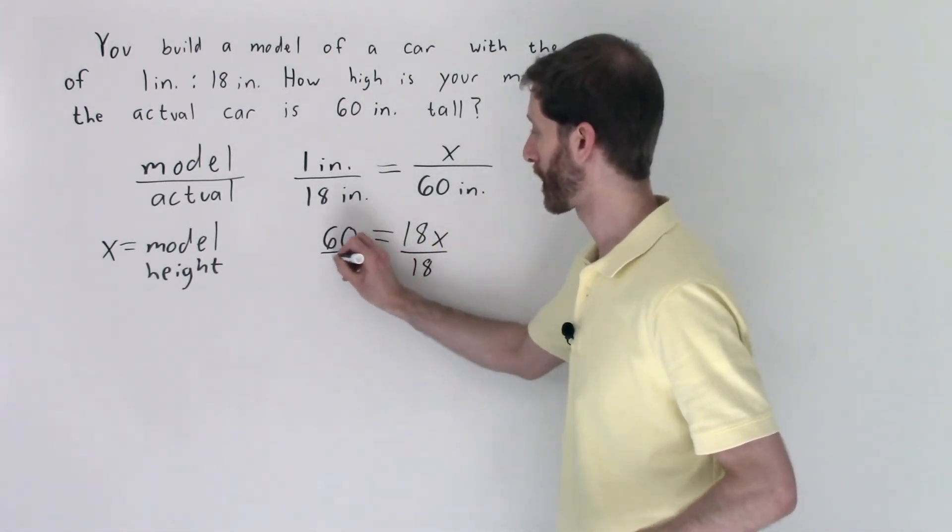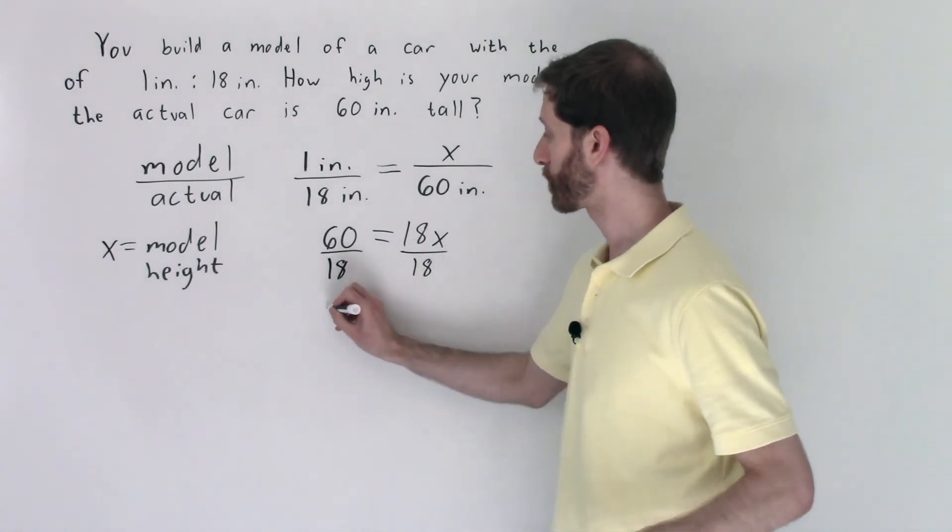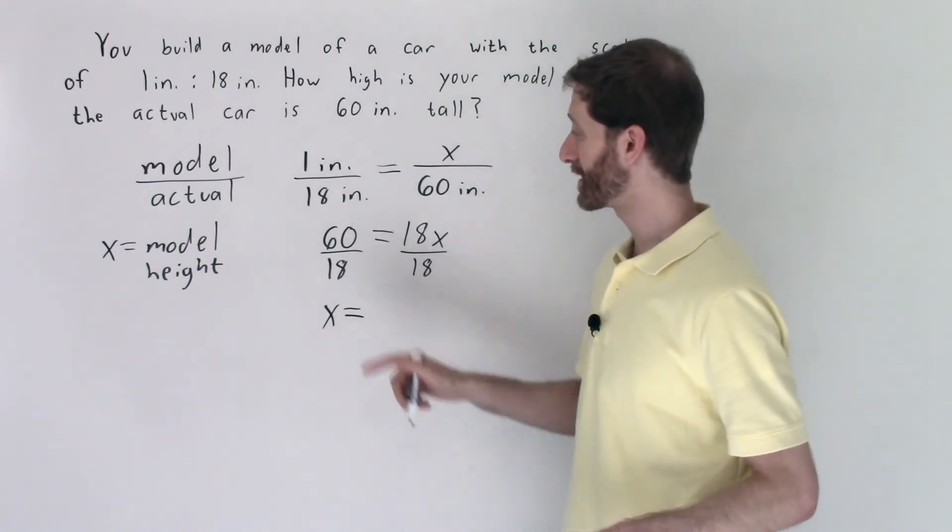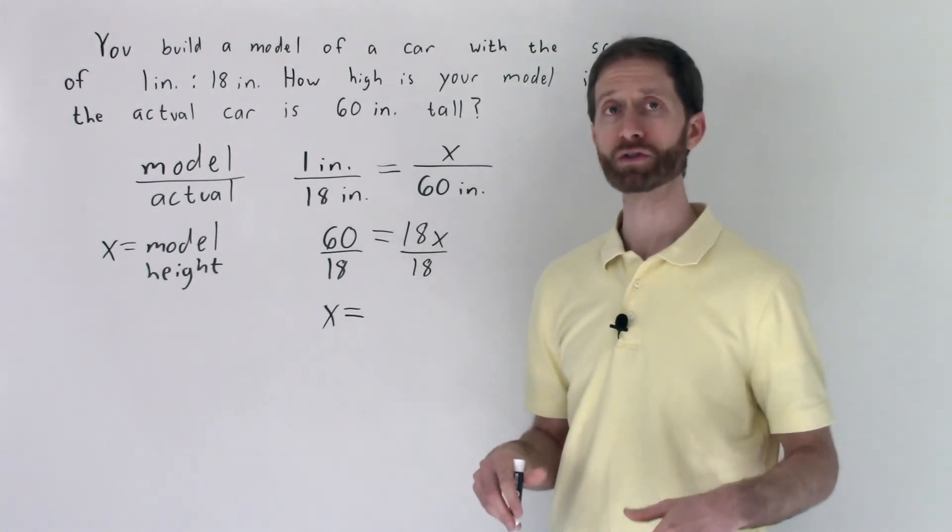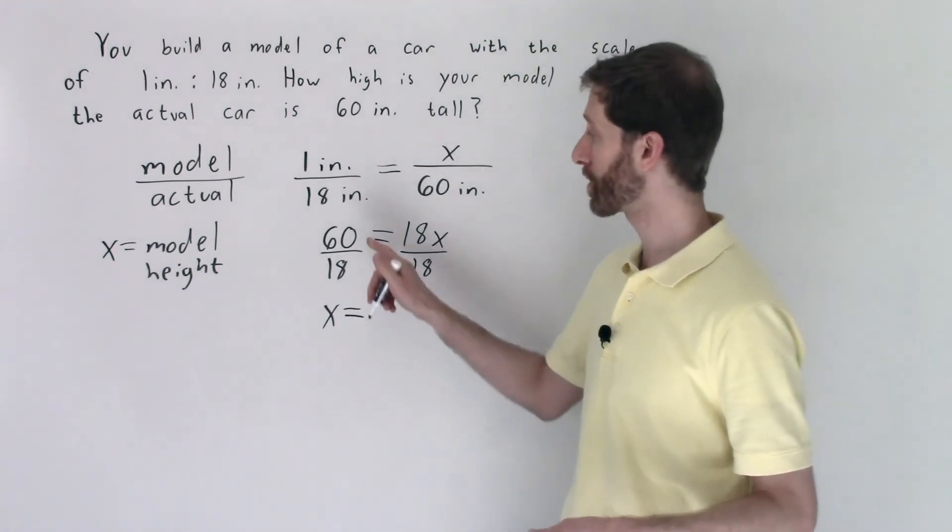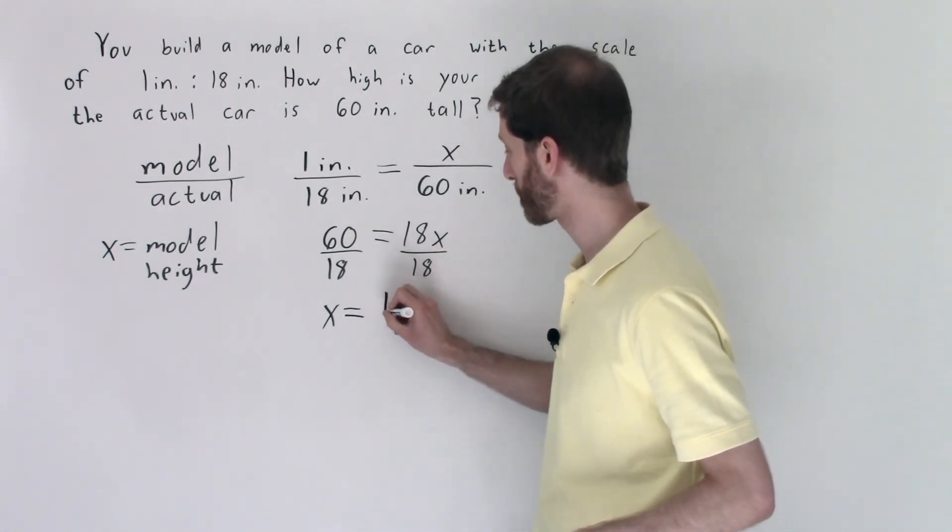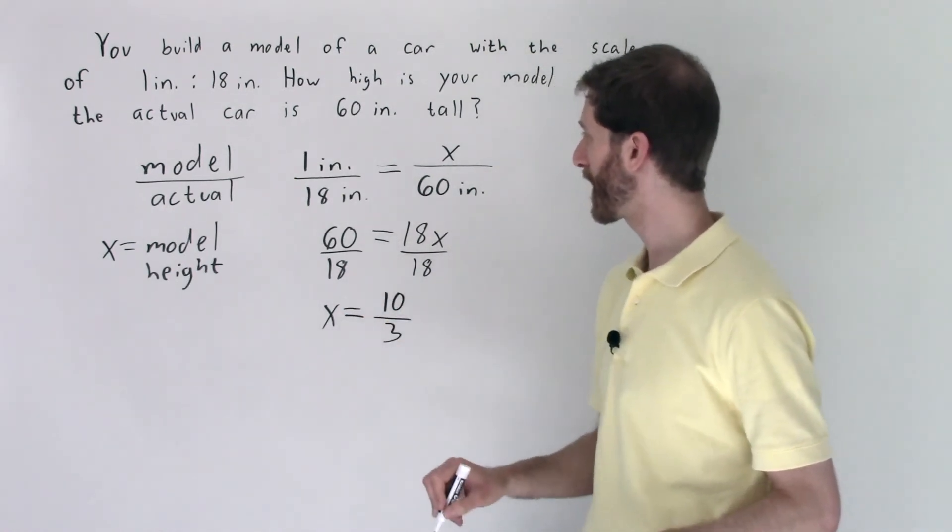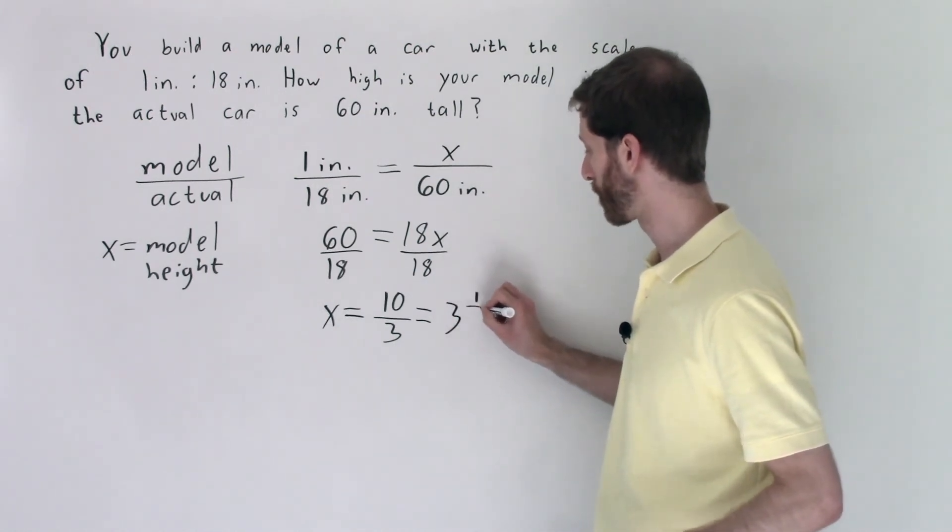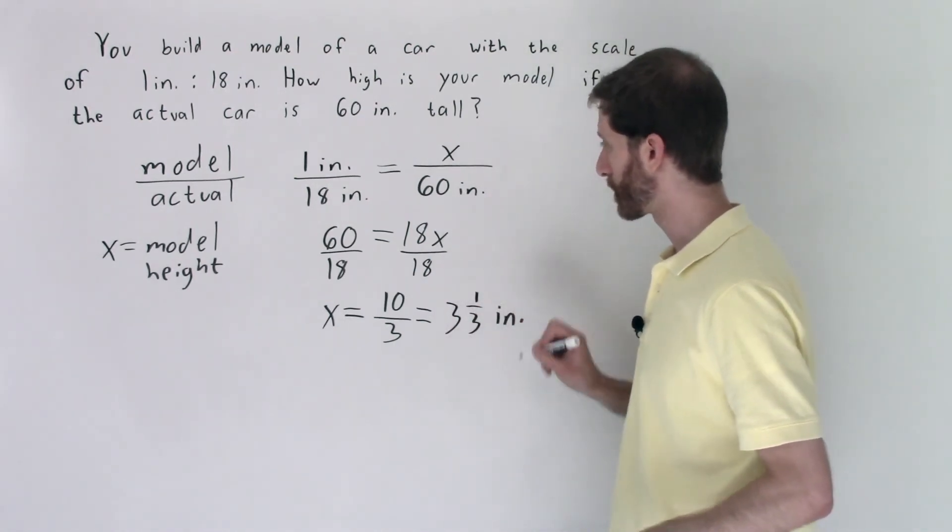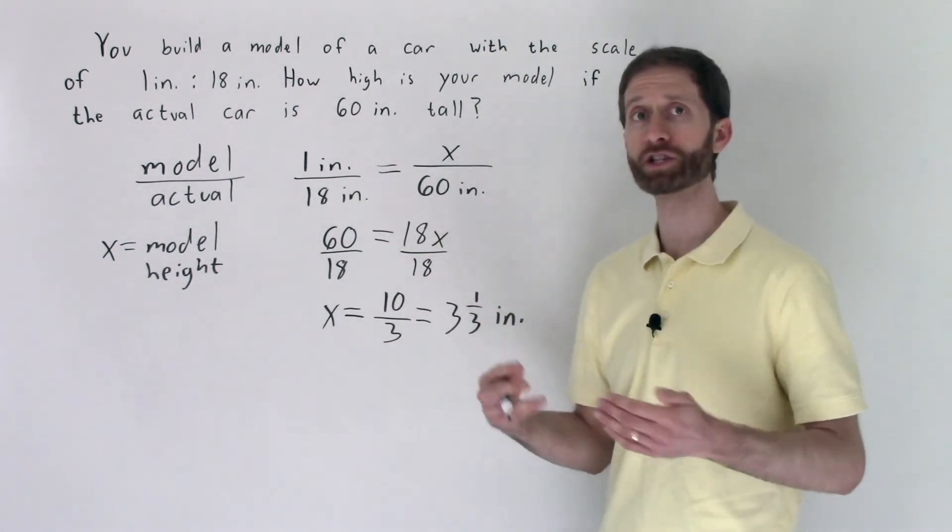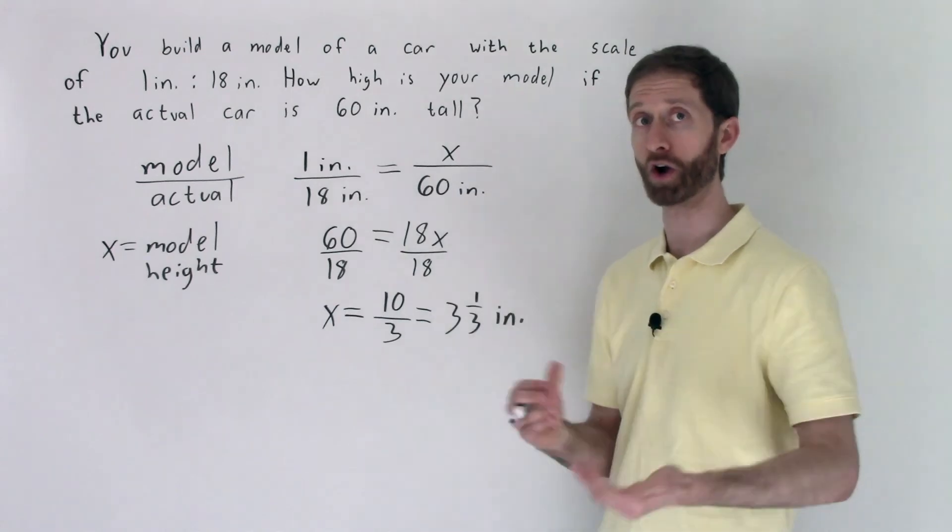Now we're left with, I'm going to bring my variable to the left, just switching things up a little bit, it's all good. 60 divided by 18, that can be reduced by dividing by the greatest common factor of 6. 6 goes into 60 ten times and into 18 three times. So we have 10/3 inches. Well I think that's better read as 3 and 1/3 inches. So that means the height of your model needs to be 3 and a third inches to correspond to a 1 inch to 18 inch model to actual car ratio.